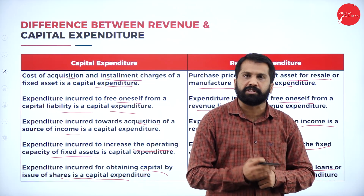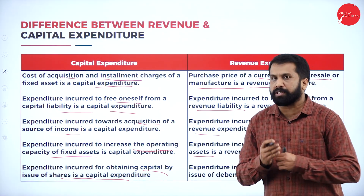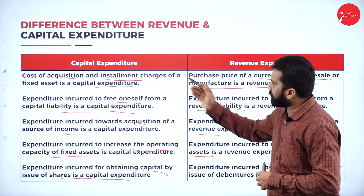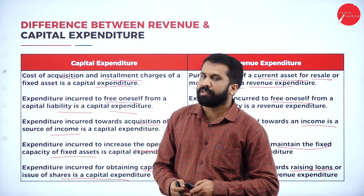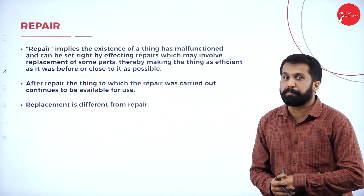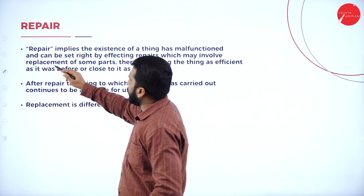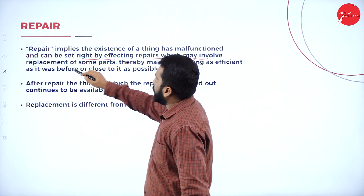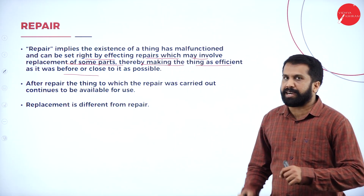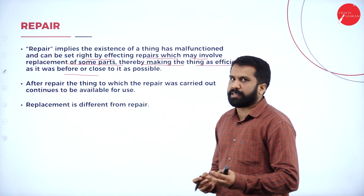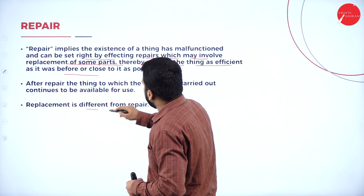So these are called revenue expenditures. What you are supposed to remember is simply the difference between what is capital and what is revenue expenditure. Under capital expenditure, those items are called capital; under revenue, those are called revenue expenditure — only that difference you need to remember. Now, let's go with repair. Repair implies the existence of something that has malfunctioned and can be set right by effecting repairs, which may involve replacement of some parts, thereby making the thing as efficient as before.